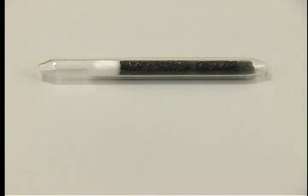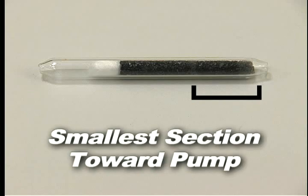If the tube does not have an arrow, then place the end of the sorbent tube with the smallest sorbent section, backup section, into the tube holder toward the pump.